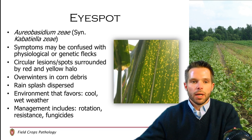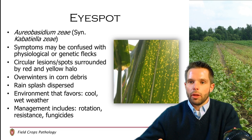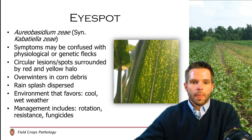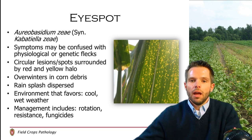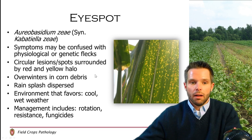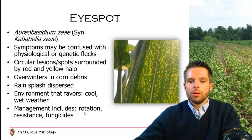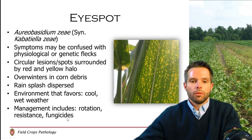The spores are splash dispersed in the spring and summertime as we have our rains, and the disease can slowly move up from the bottom of the plant to the top. Cool, wet weather can be very important for the development of eye spot, so in years where we don't have a lot of heat and dryness you may see more eye spot, and in dry years you may not see any at all. Management includes rotation, resistant hybrids, and also some foliar fungicides.